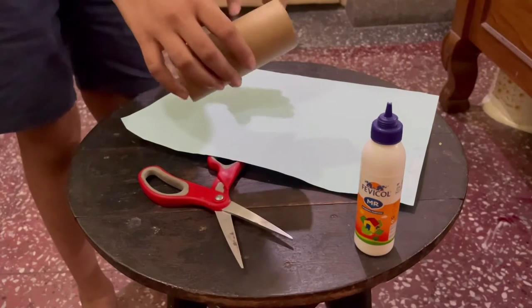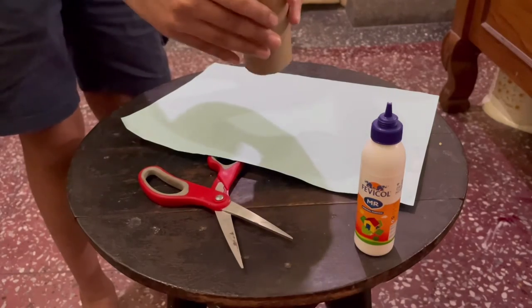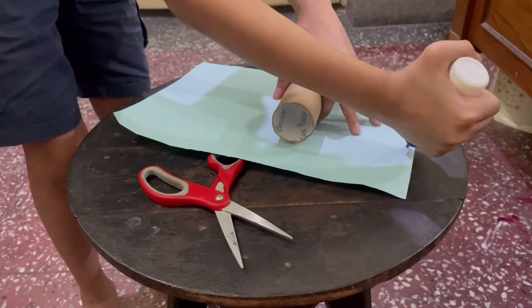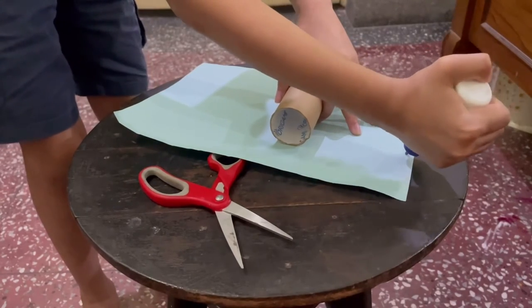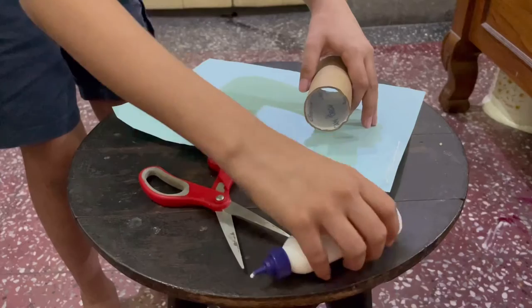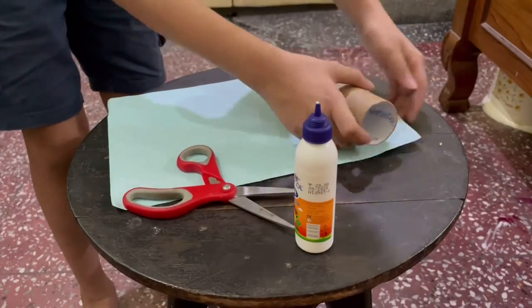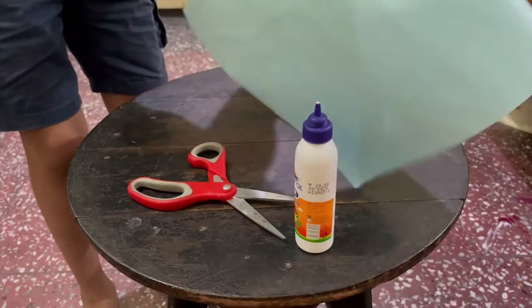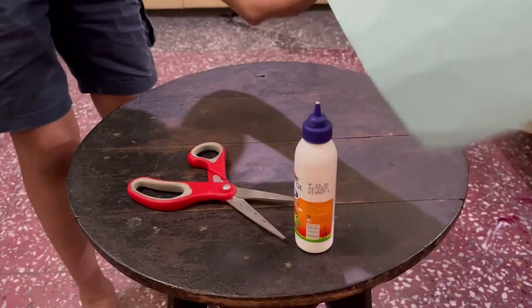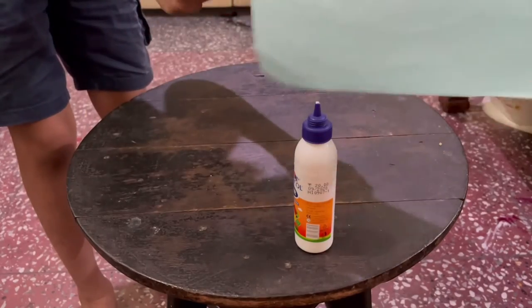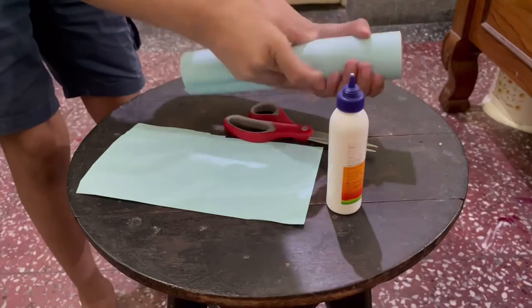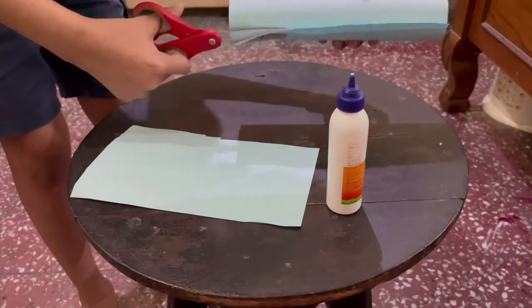So now we have to cover the cardboard roll with the blue paper like so. Now we are going to cut off a bit of the excess blue paper.